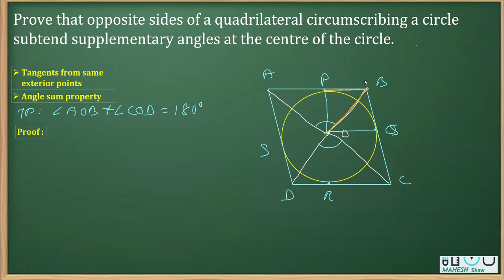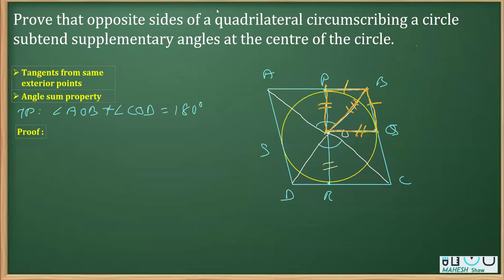First, prove two triangles congruent. We can say these are tangents from the same exterior point, these are radii, and this side is common — so we can prove the two triangles congruent by SSS. Similarly, the other two triangles can also be proved congruent: equal radii, tangents from same exterior point, and a common side.